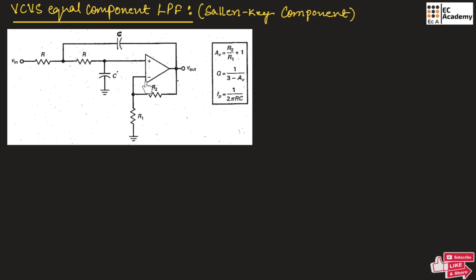Also, we are having some voltage gain in this circuit, since we are connecting two resistors at the feedback. Voltage gain of this equal component low pass filter can be given as AV is equal to R2 divided by R1 plus 1.